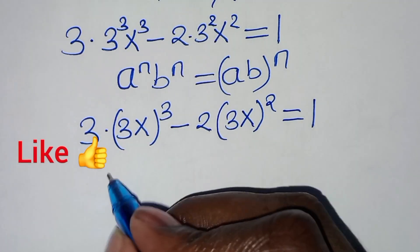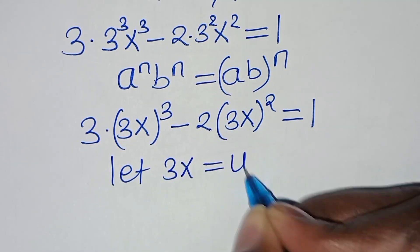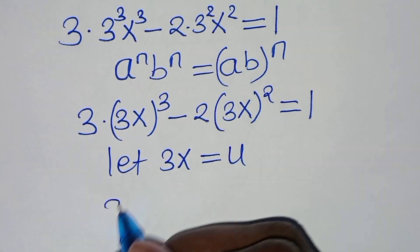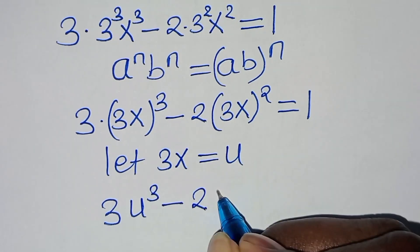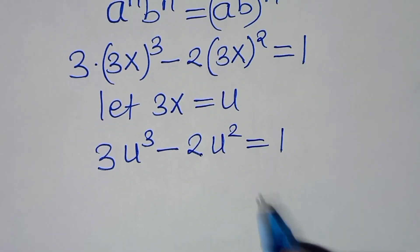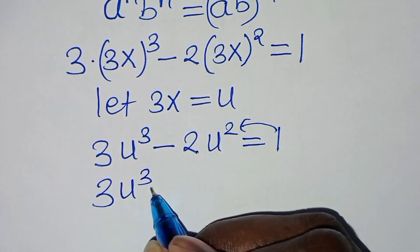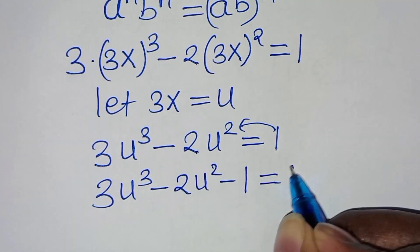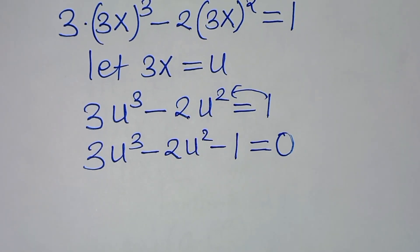The next step from here, we can let 3x be equal to u. Now let's substitute, so that we have 3u³ minus 2u² equals 1. Let's take 1 to the left-hand side so that we have 3u³ minus 2u² minus 1 equals 0.